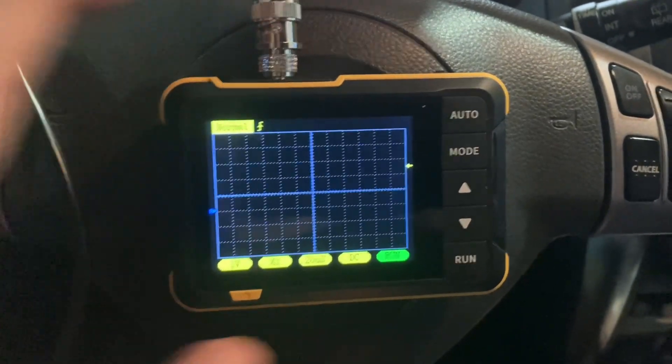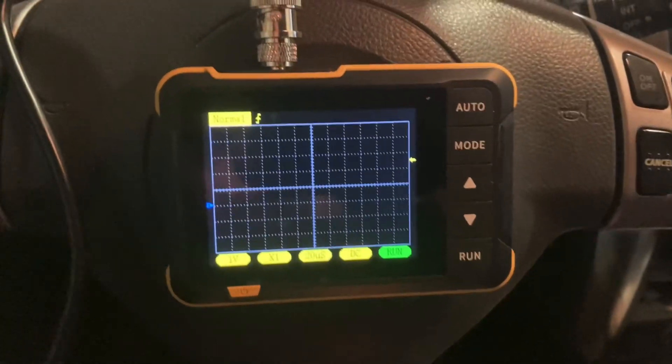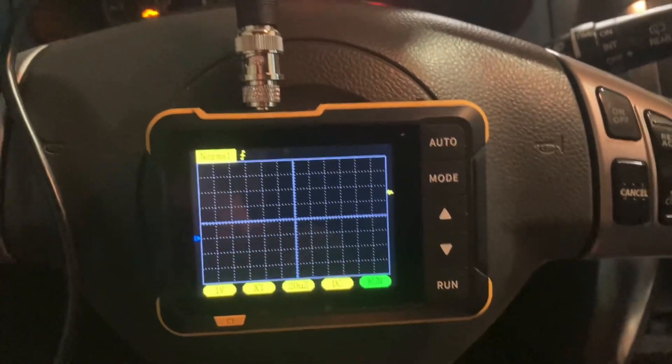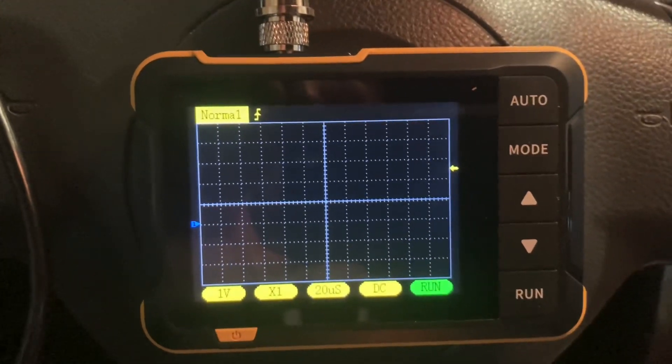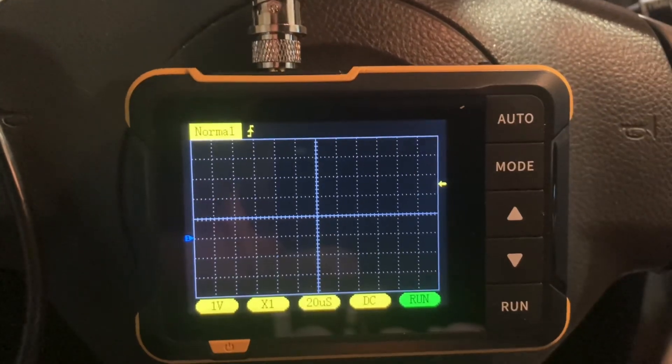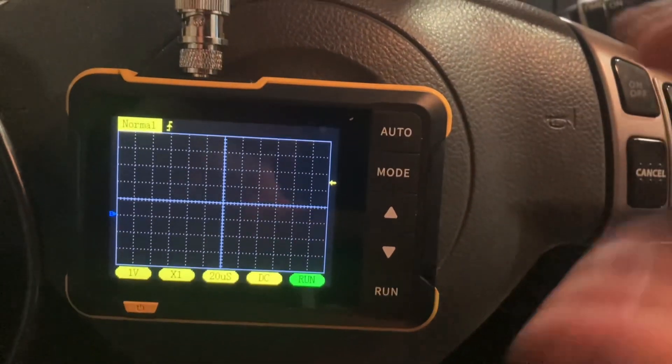I'm bringing out my little Fnirsi C DSO 152 and I wanted to put it through its paces to some degree with different signals on the car. I thought I would start with probably the most challenging signal for this little scope to cope with, the CAN bus.